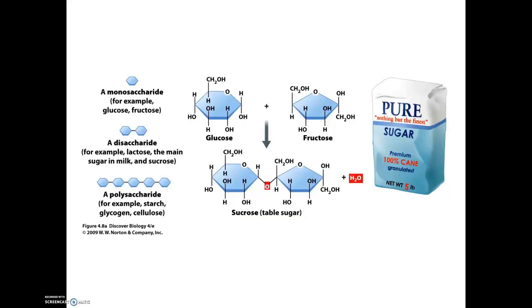In this diagram we see a monosaccharide, a single sugar like glucose. A disaccharide, like sucrose or table sugar, which is made by linking glucose and fructose together. And then a polysaccharide, which is a long chain of monosaccharides.